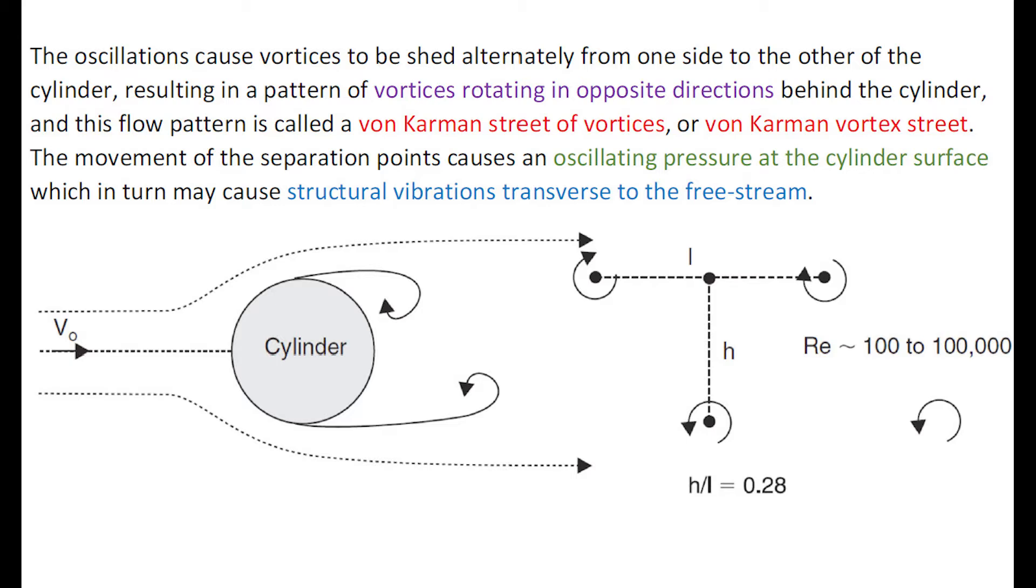The movement of the separation points causes an oscillating pressure at the cylinder surface, which in turn causes structural vibrations transverse to the main flow direction.